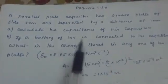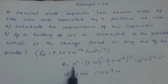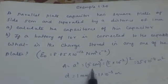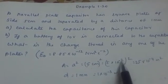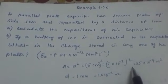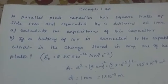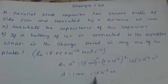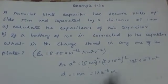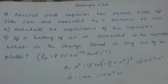Now, for the parallel plate capacitor, the plate has side 5 cm. So we can find out the area. Area is equal to a squared, that is 5 cm squared, which can be written as 5 into 10 raised to minus 2, the whole squared. So it is 25 into 10 raised to minus 4 meter square. The distance is given as 1 mm, which is equal to 10 raised to minus 3 meter. Capacitance of the capacitor is asked.